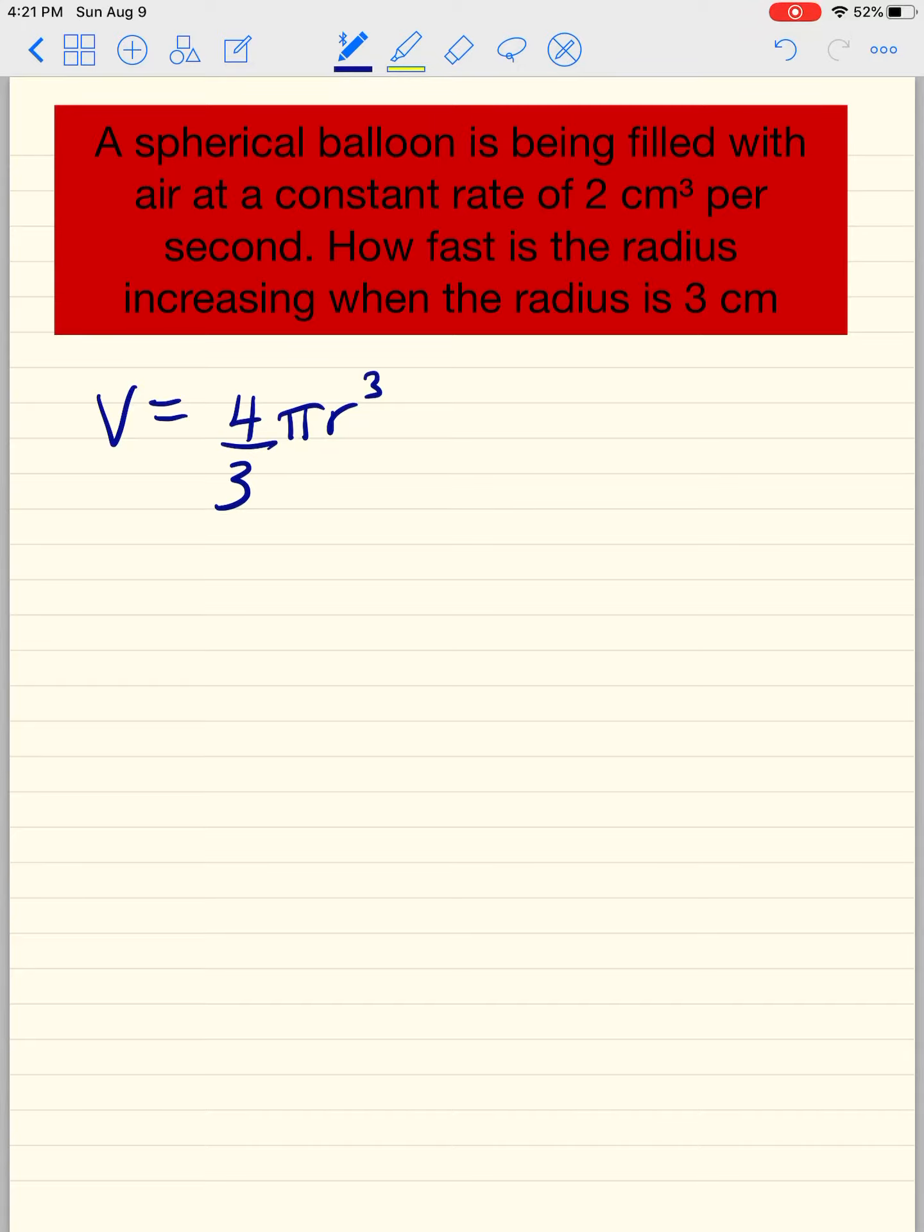So let's take the derivative of this with respect to time. And if you watch the other video, you would see how to do this. So dV/dt, 4/3 π is a constant, you just leave it. And the derivative of r³ is 3r² by the power rule. Because this is a letter other than t, you're going to go dr/dt.